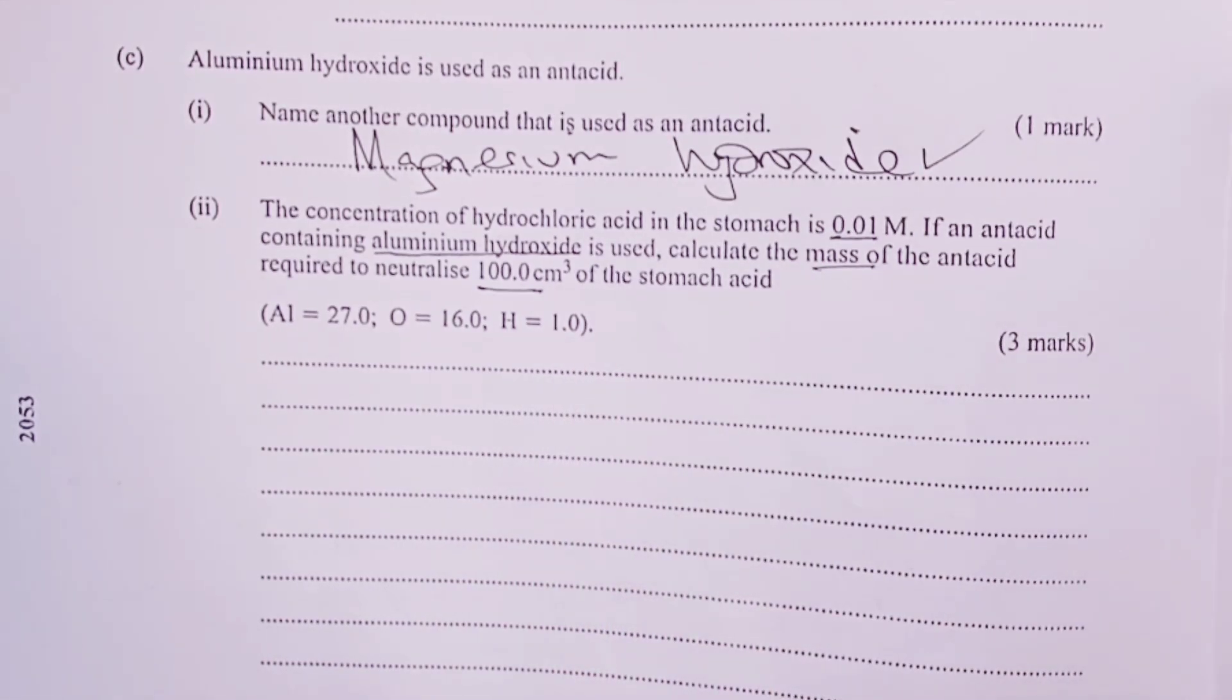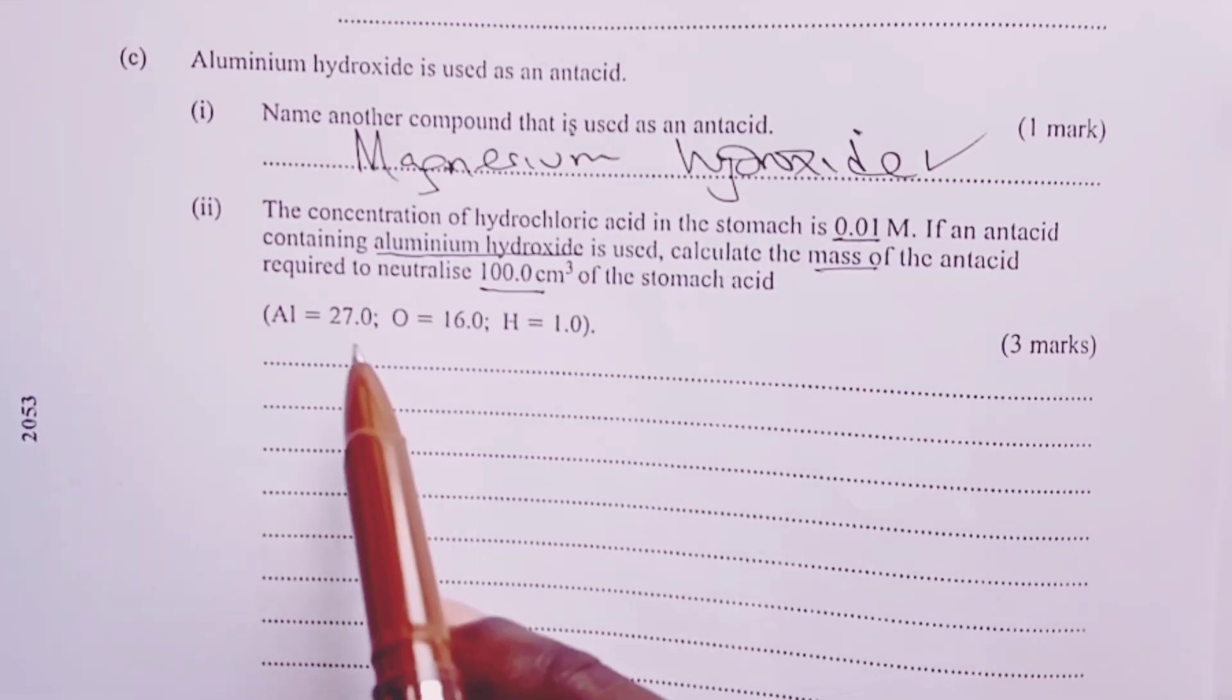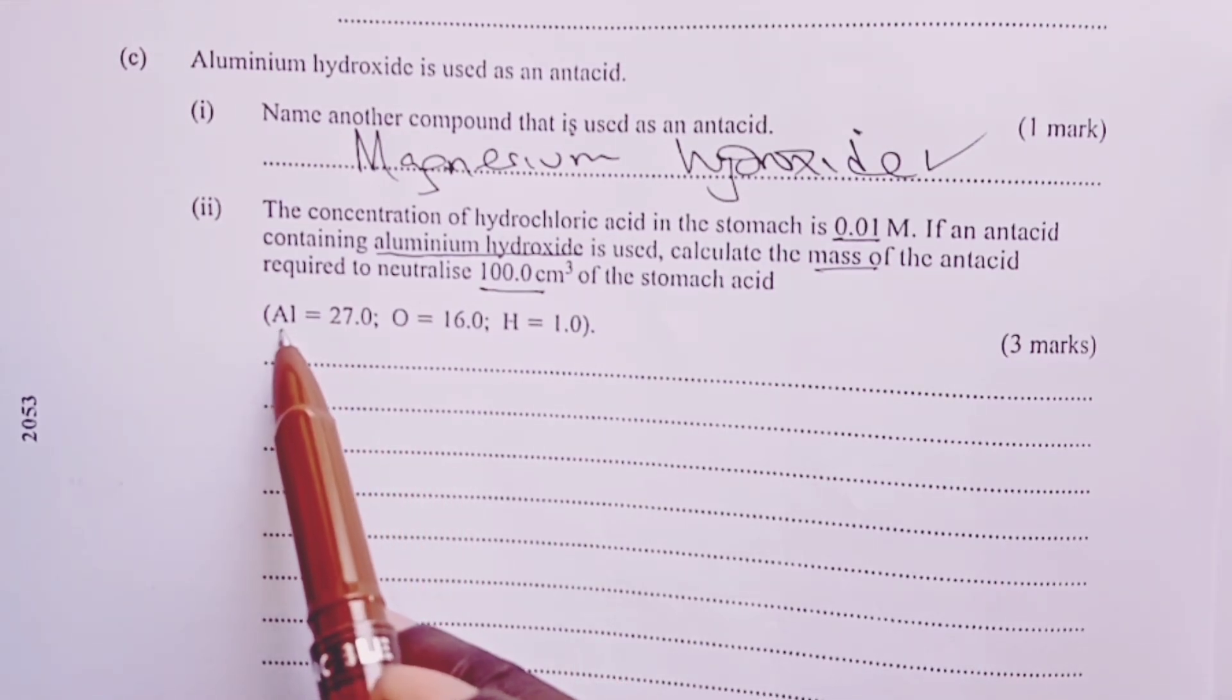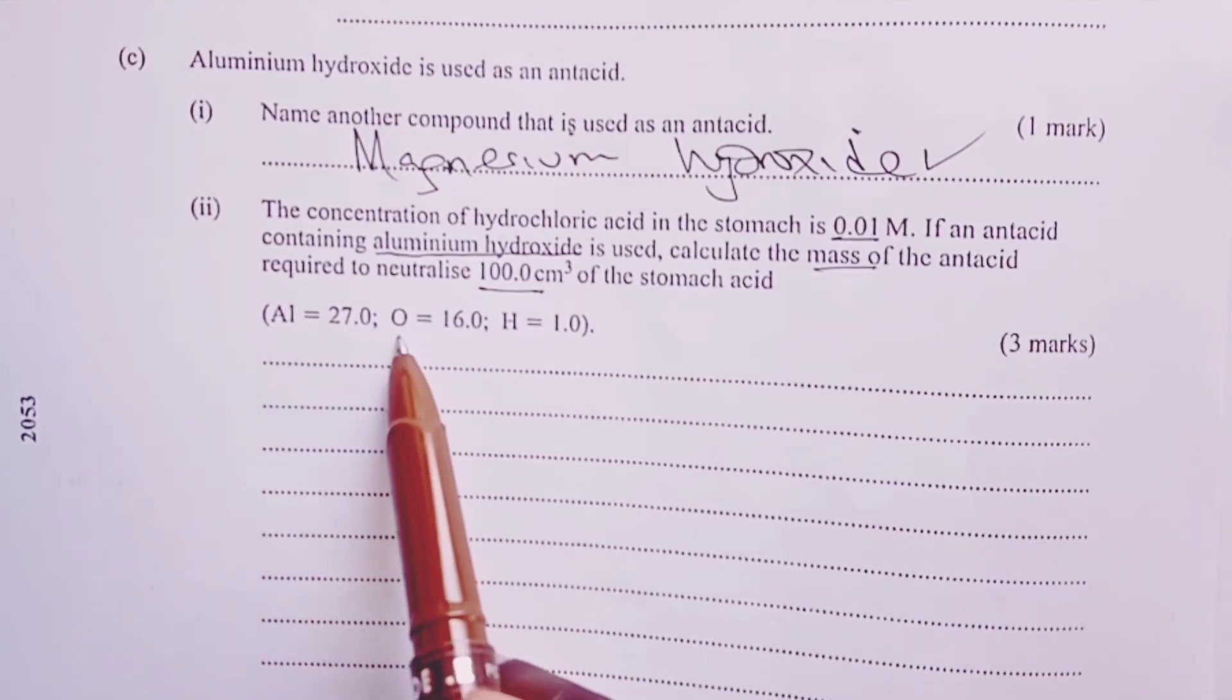we are being asked to calculate the mass of the antacid that would be required to neutralize 100 cm³ of the stomach acid. Of course, we have been given the relative atomic masses of aluminium, oxygen, and hydrogen.